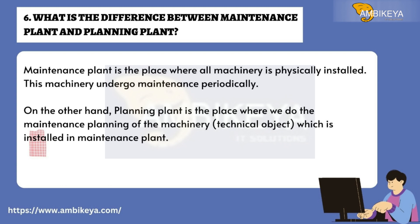Question number six: What is the difference between maintenance plant and planning plant? Maintenance plant is the place where all machinery is physically installed and undergoes maintenance periodically. Planning plant, on the other hand, is the place where we do maintenance planning of the machinery and technical objects installed in the maintenance plant.